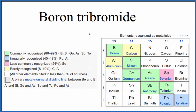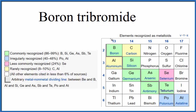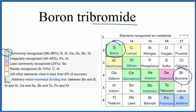In this video we'll write the formula for boron tribromide. The first thing we need to recognize is that boron is considered a metalloid — a commonly recognized metalloid — and bromine is a non-metal. So we have a metalloid and a non-metal, which means we're going to consider this a covalent, also called a molecular, compound.